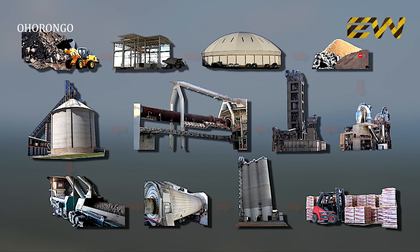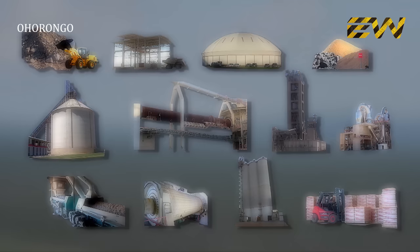Now let's summarize the entire cement production process. This is a schematic presentation of the whole cement manufacturing process. Raw materials such as limestone, shale, and marl are collected at the quarry and transported to the crusher.